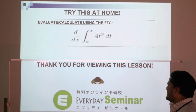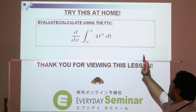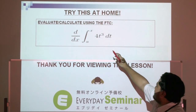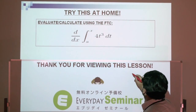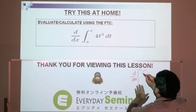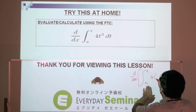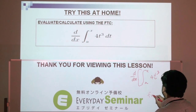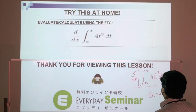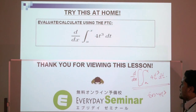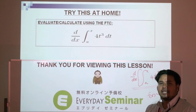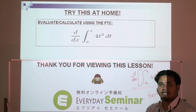Thank you for joining us today with Everyday Seminar. Before we leave, try this at home: evaluate or calculate using the FTC. Differentiate the integral — note it has a differential part — with the function t to the power of 4 cubed with respect to t. We'll give you the solution next week.